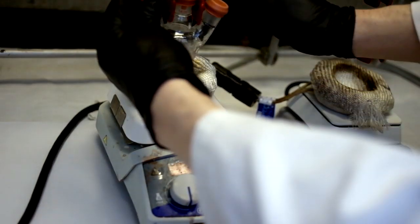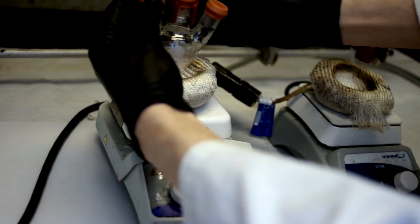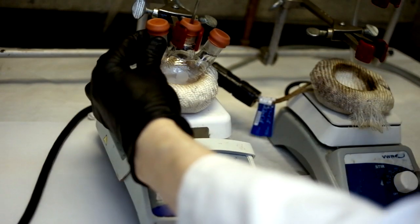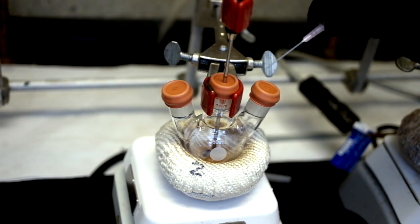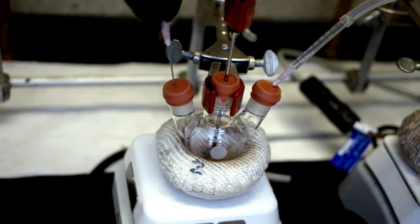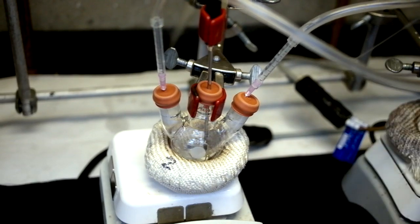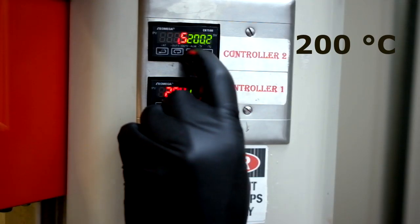Begin by placing the reaction flask onto the heat mantle. Insert the temperature probe and set up an argon flow. Begin the stir bar and set the temperature to 200 degrees centigrade.